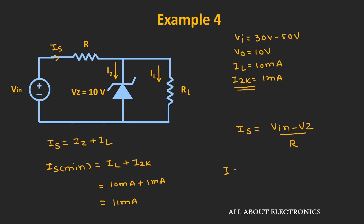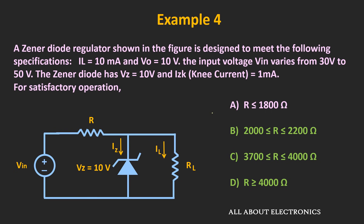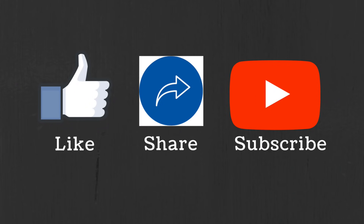So the maximum value of R is approximately 1818 Ω, meaning R must be less than or equal to 1818 Ω. For the given options, option A is the correct answer. These are a few examples based on the Zener regulator circuit with non-ideal Zener diode considerations. If you have any questions or suggestions, let me know in the comments. If you liked this video, hit the like button and subscribe for more.